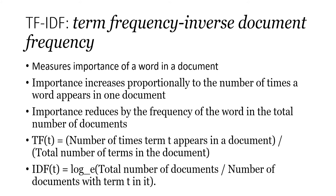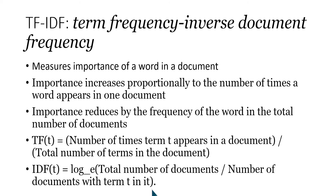The next step is to calculate inverse document frequency, which is calculated as the total number of documents divided by the number of documents containing term T. For example, if you have 100 documents and 50 of them contain a particular term, that's 100 divided by 50. If the word appears in most documents, this ratio gets larger but you take the natural logarithm, so the IDF value will actually decline.